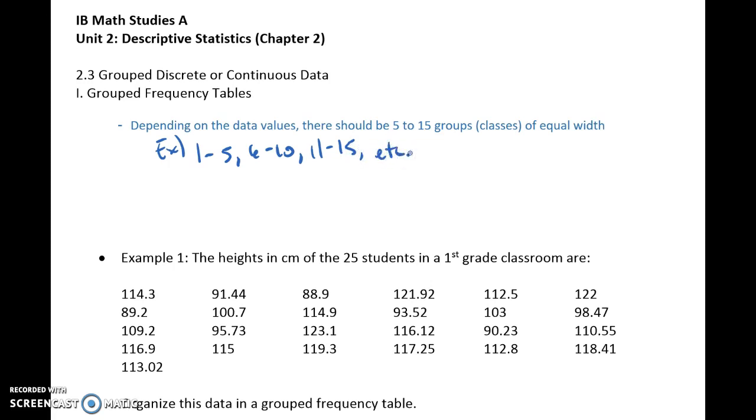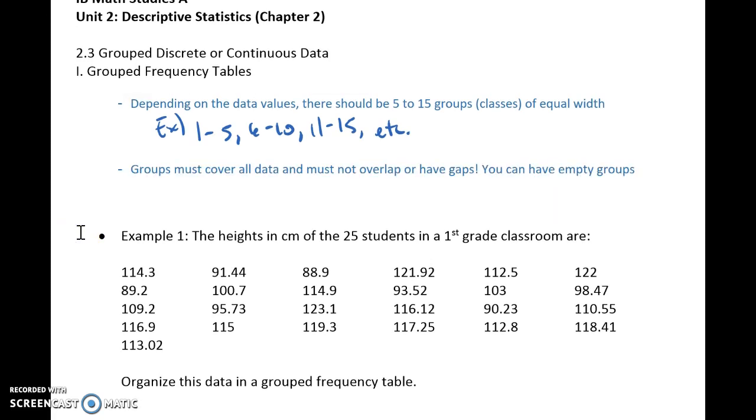Equal width meaning they should be the same spacing apart. So we don't want something like 1 to 5, 6 to 8, 9 to 14, etc. Your groups or classes must cover all data, so you don't want to leave anything out, and they must not overlap or have gaps. You can have empty groups. So if you do end up having a gap, you want to have a group there that would represent zero, basically.